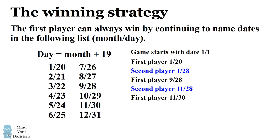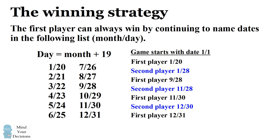Now you can see the second player is stuck. From November 30th there is no later date in November, so the second player has to call out something in December — and that would be December 30th. And that leaves the first player the winning date of December 31. So this is an example of how the first player can win. There are different ways the game can be played, but it will always end with the first player calling out December 31, as long as they start with January 20th and continue naming dates in this list.